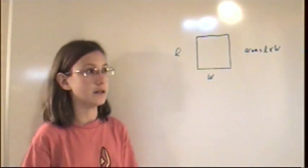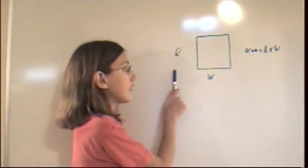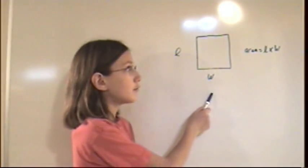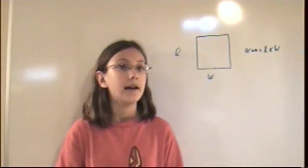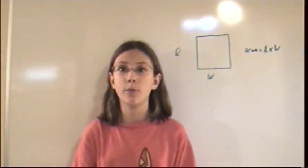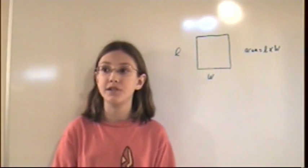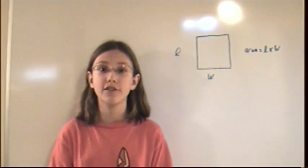To measure distances, we also need to know angles. Angles are measured in degrees. Using distances, the distance of length times the distance of length equals area. Area is the number of square units in a flat surface.